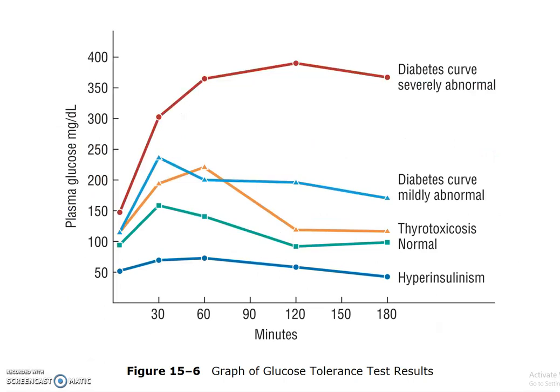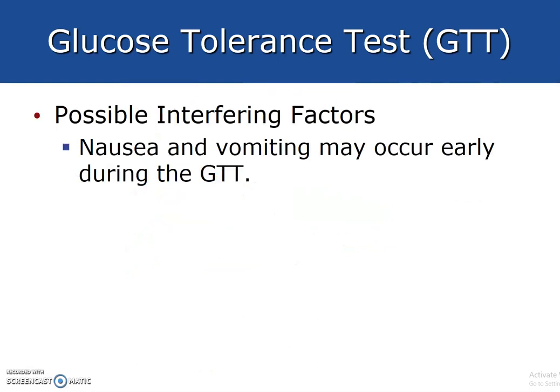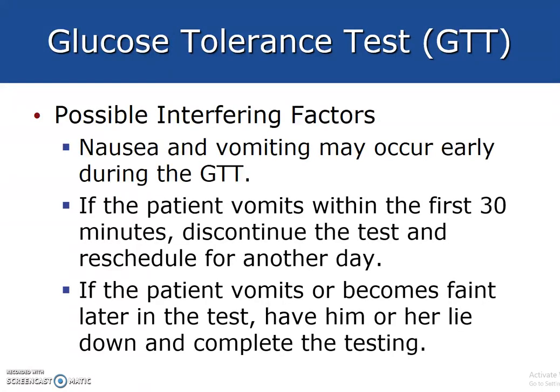A graph of glucose tolerance test results shows the differences in time intervals and plasma glucose levels. Interfering factors with the GTT: nausea and vomiting may occur early during the test. If the patient vomits within the first 30 minutes, discontinue the test and reschedule for another day. If the patient vomits or becomes faint later in the test, have them lie down and complete the testing.